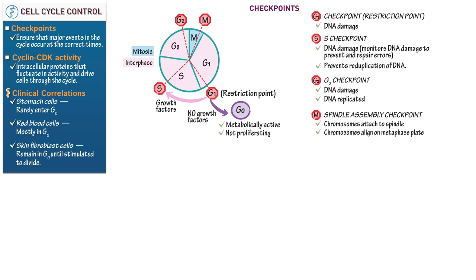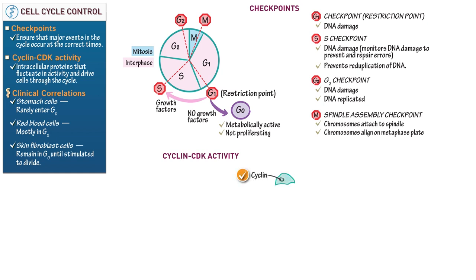Now let's illustrate the role of cyclin and cyclin-dependent kinases in cell cycle regulation. Draw cyclin, which is a regulatory protein with no enzymatic activity. Show that it binds CDK, which is an enzyme. Cyclin binds to CDK enzymes to activate them — thus, CDK activity is cyclin-dependent.